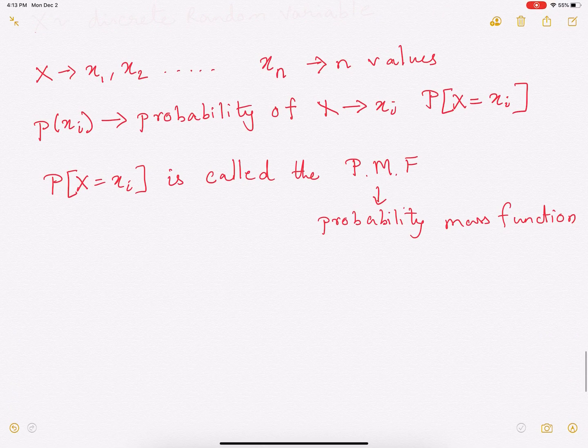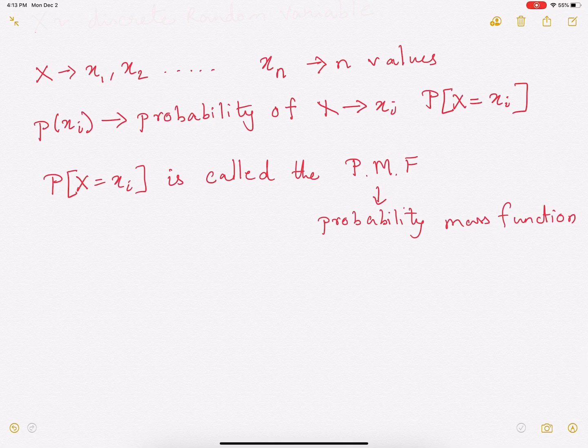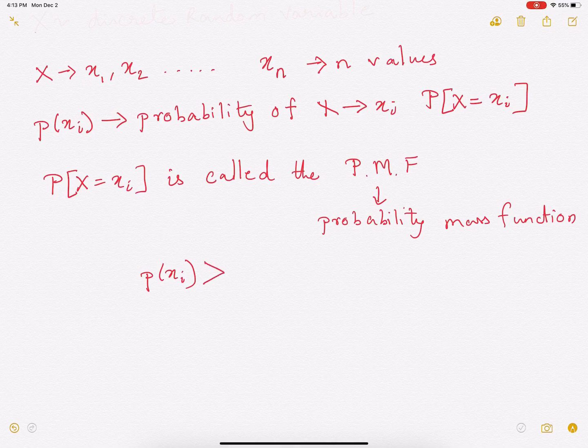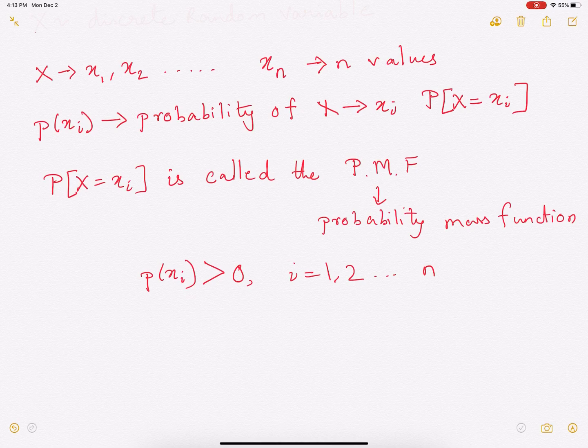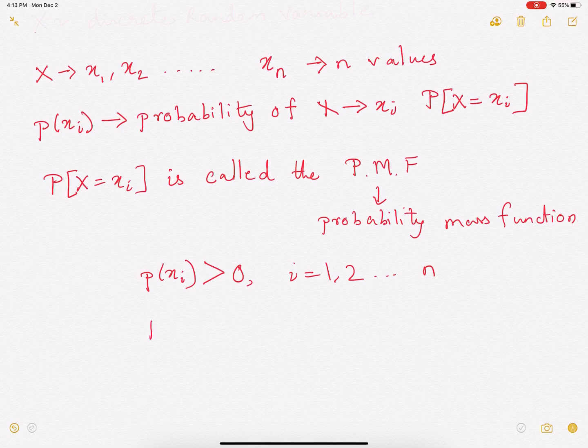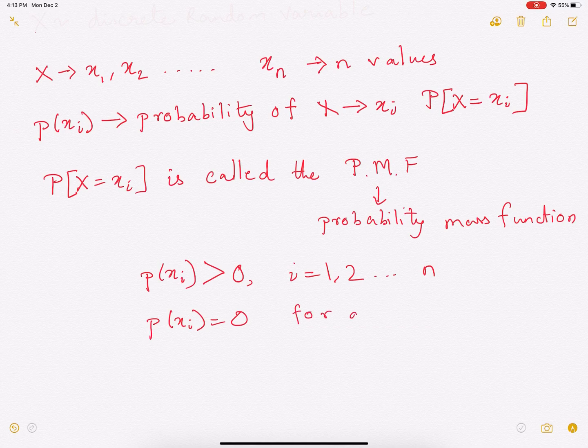So how can we define this? We can define this as P of xi because it is a probability. It will be greater than 0 for i equals 1, 2, all the way up to n. That is probability of x equals x1 will be a value greater than 0. And probability of xi equal to 0 for all other values of x.